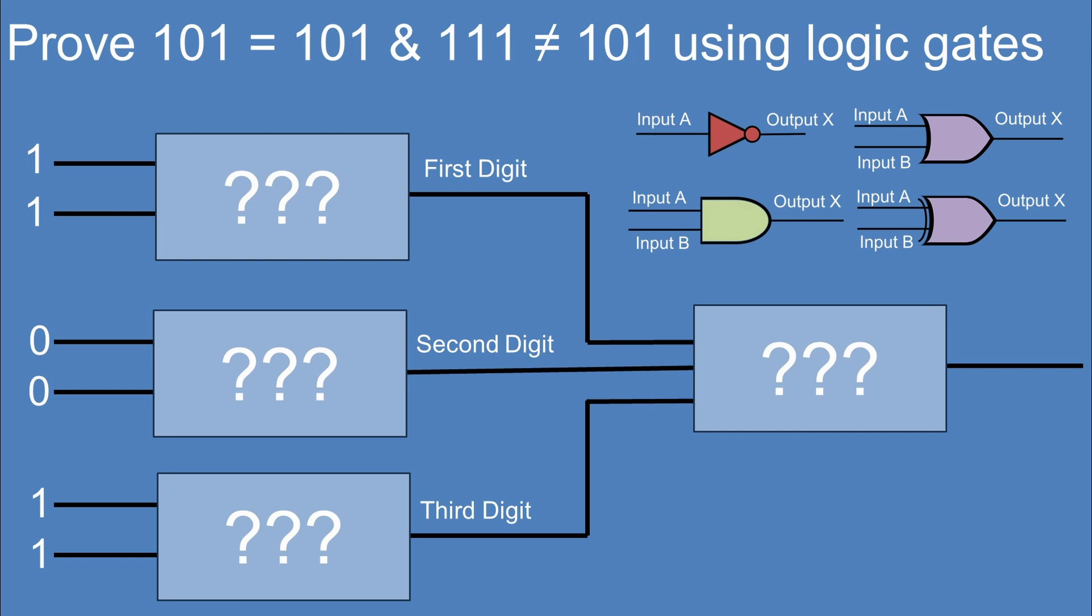Welcome to Intro to Digital Logic Part 14. In this one, we want to create a logic diagram for a comparator that compares the values 101 to 101 and 111 to 101 to see if they are equal. How do we go about solving this one?